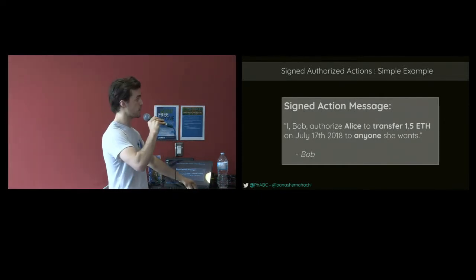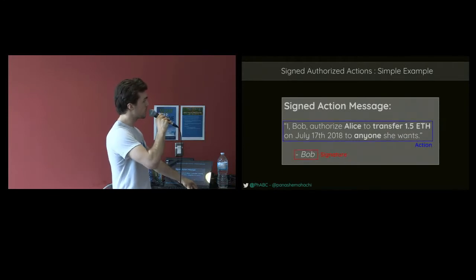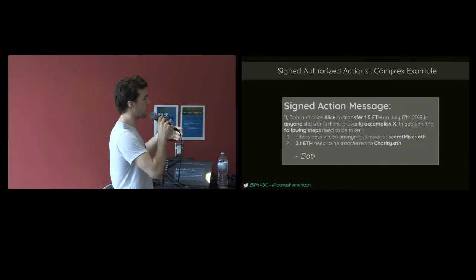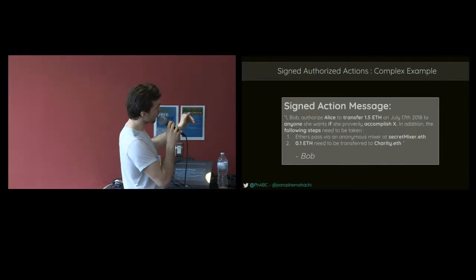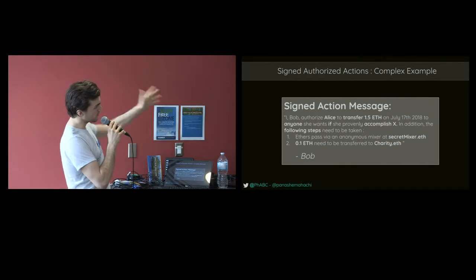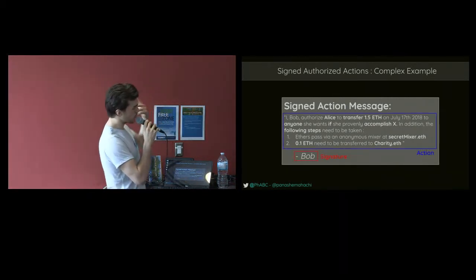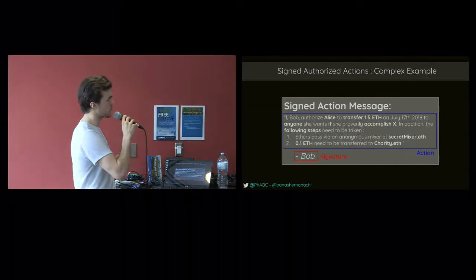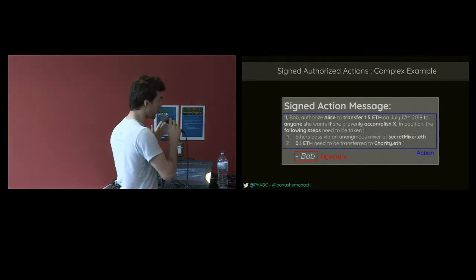But now you could have much more complex types of signed messages. You could say: I Bob authorize Alice to transfer 1.5 ETH in July if she provably accomplishes X — based on another contract. And before the 1.5 ETH is transferred, I want the ETH to pass via anonymous mixer at secretmixer.eth — so it goes through a ZK-SNARK contract. And I also want 0.5 ETH out of these 1.5 ETH transferred to charity.eth. You could basically abstract this and put any arbitrary action, any arbitrary logic — this, this, this to happen before someone can execute this transaction. And I think that's extremely powerful.